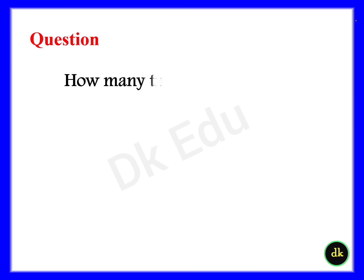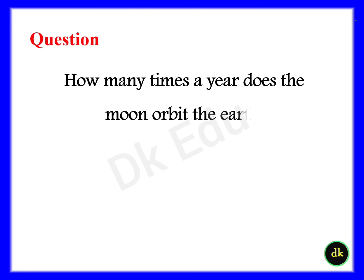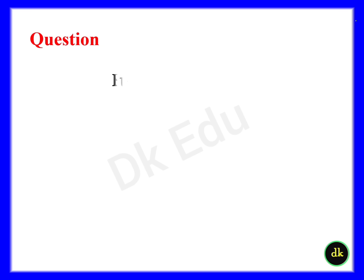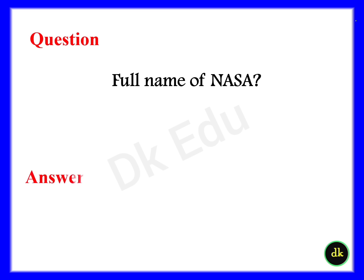Question: How many times a year does the moon orbit the Earth? Answer: 13 times. Question: What is the full form of NASA? Answer: National Aeronautics and Space Administration.